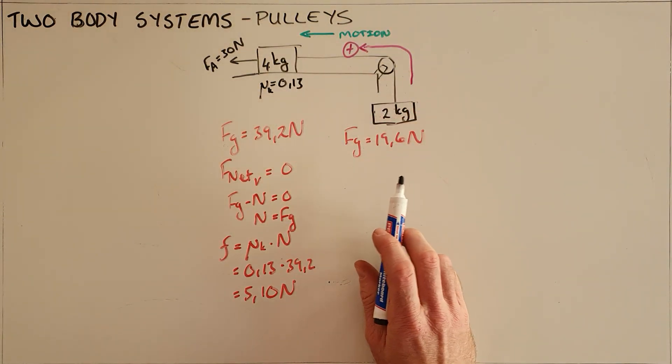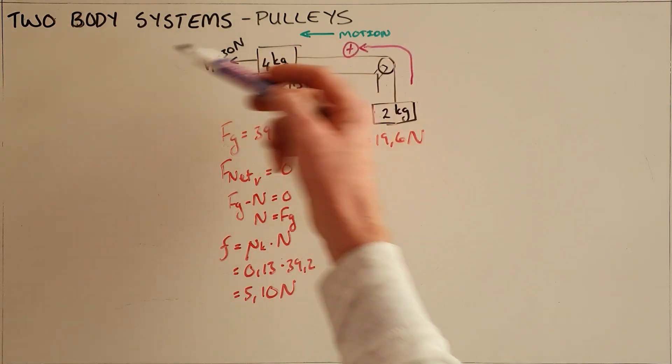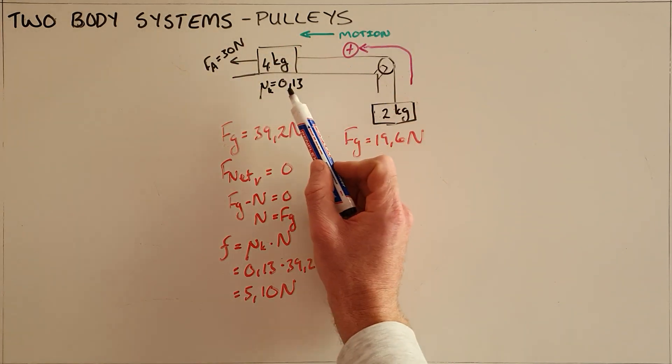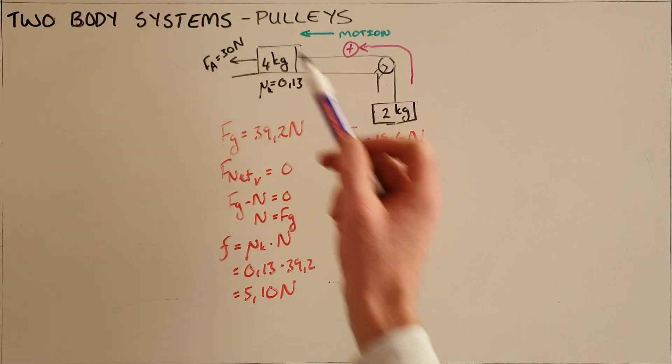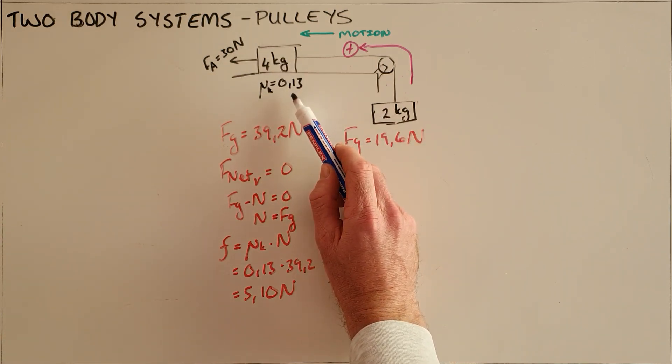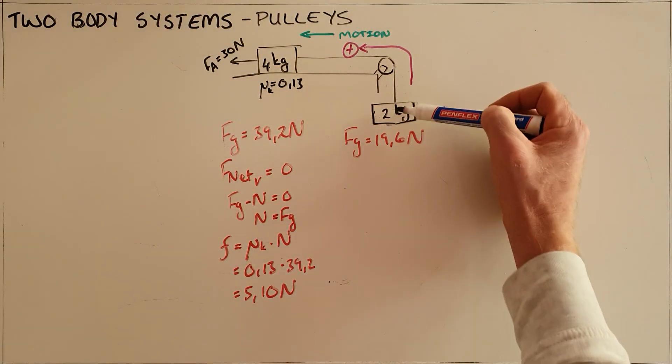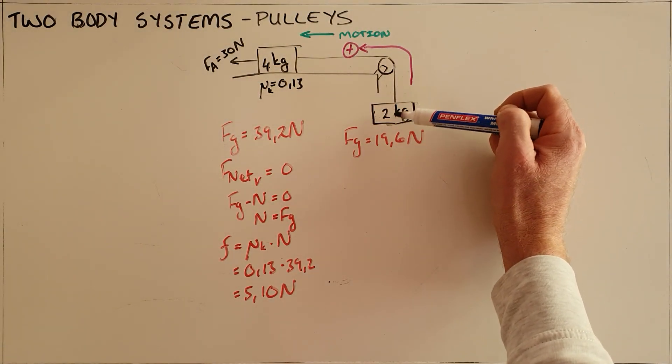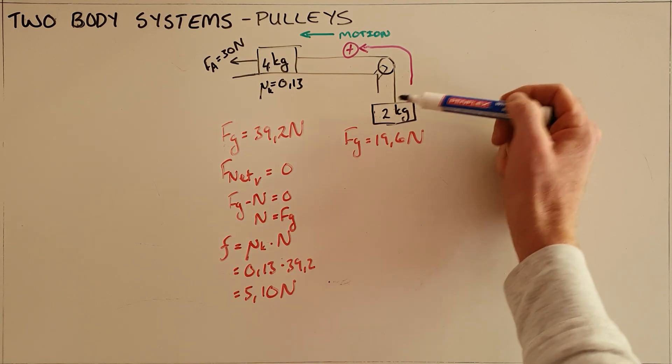This question states that an object is being pulled to the left, meaning there is motion to the left. It is a 4 kilogram object, the applied force is 30 newtons, the coefficient of kinetic friction is 0.13, and it is tied to a 2 kilogram object with a rope moving over a pulley.